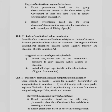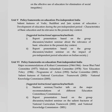Unit 5 is Policy Framework on Education — Pre-independent India: salient features of Vedic, Buddhist and Jain systems of education; development of education during the pre-independent period; characteristics of basic education and its relevance to the present-day context. Unit 6 is Policy Framework on Education — Post-independent India: major recommendations of Kothari Commission (1964–1966), Ishwar Bhai Patel Committee 1977, Malcolm Adiseshiah Committee 1978, New Education Policy 1986, Program of Action 1992, Yashpal Committee 2005; salient features of National Curriculum Framework 2005 and National Knowledge Commission 2005.